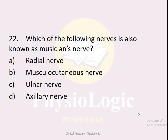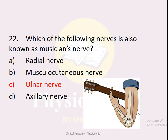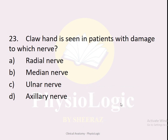MCQ number twenty-two: Which nerve is also known as the musician's nerve? Options: A — radial nerve, B — musculocutaneous nerve, C — ulnar nerve, D — axillary nerve. The correct option is C — ulnar nerve. It is called the musician's nerve because it supplies the muscles responsible for fine finger movements, as needed when playing guitar or piano.